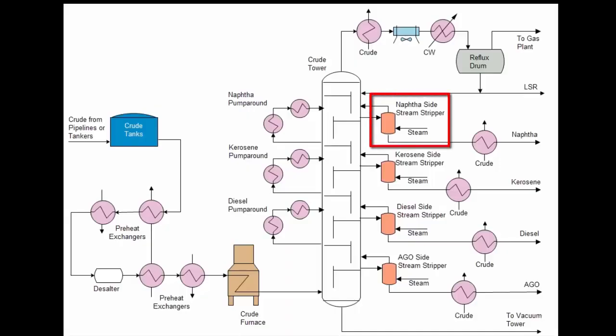There are sidestream strippers on a tower that use steam in order to vaporize the lightest material of those products back into the tower. Here are the product draws from naphtha, which is essentially gasoline, kerosene, and diesel. There is also an additional draw for atmospheric gas oil, AGO, which is a feed to the FCC.